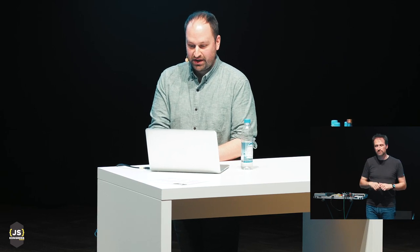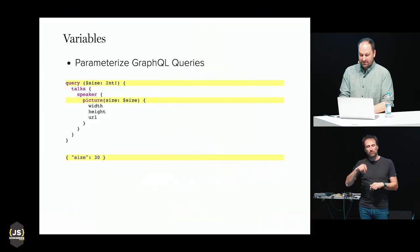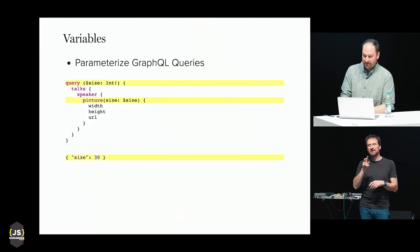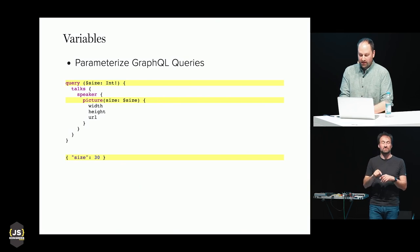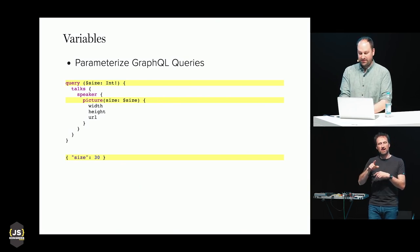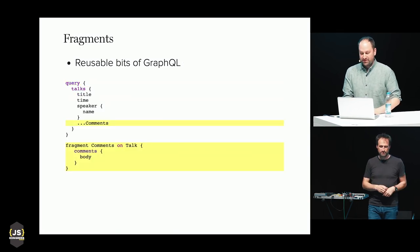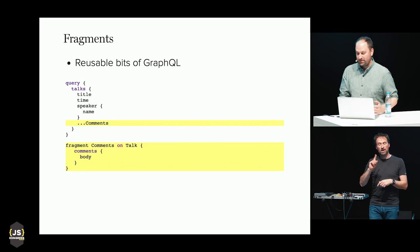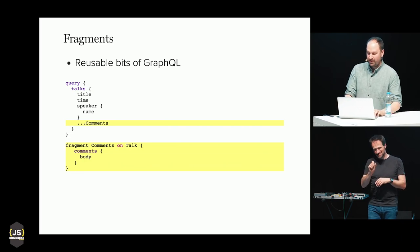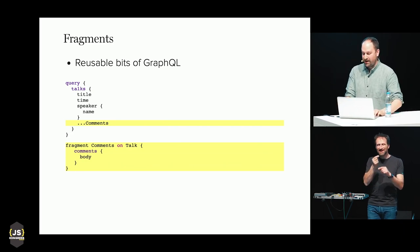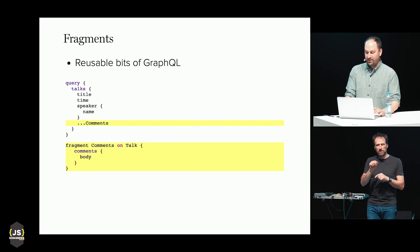The next GraphQL feature is variables, which lets you define parameters that a GraphQL query can accept. You can then send an additional JSON payload with the variable data. GraphQL also supports fragments — reusable portions of a GraphQL query. You can define a fragment and reuse it in multiple places in the query, and you can think of it as a building block of a GraphQL query.